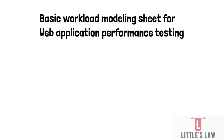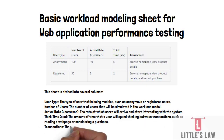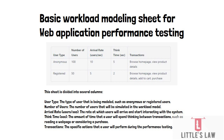The first simple workload model example divides users into anonymous and registered types. Anonymous users: 100 users, arrival rate of 10 users per second, think time of 5 seconds, performing browse home page and view product details. Registered users: 50 users, arrival rate of 5 users per second, think time of 2 seconds, performing browse home page, view product details, add to cart, and purchase. This is how a simple application workload can be designed.